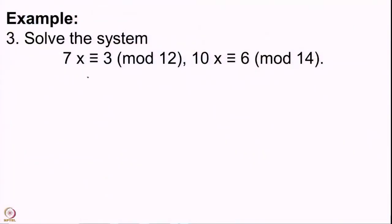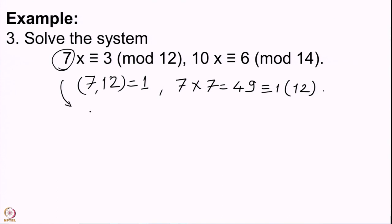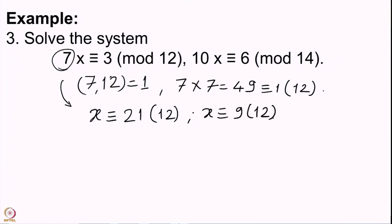For the first congruence, we see that 7 and 12 are co-prime, and therefore this system does have a unique solution modulo 12. This unique solution is obtained by multiplying by the inverse of 7. The inverse of 7 modulo 12 is 7 itself, since 7 × 7 = 49 ≡ 1 mod 12. So the first equation converts to x ≡ 7 × 3 = 21 ≡ 9 mod 12. This is the solution to the first congruence.